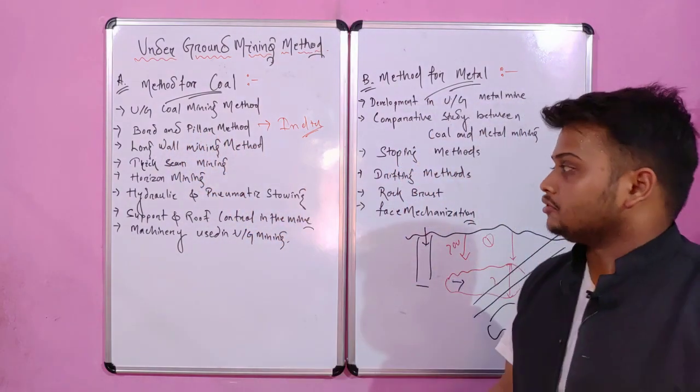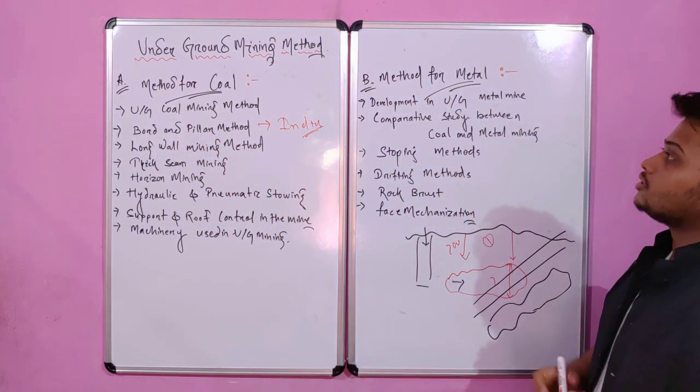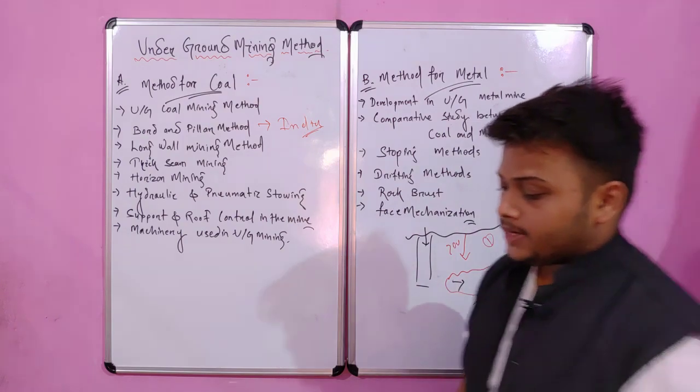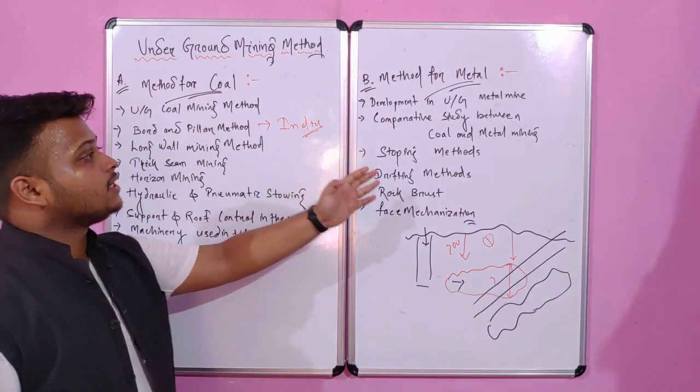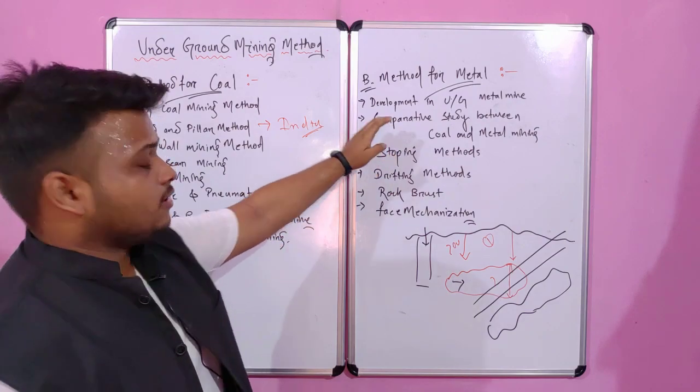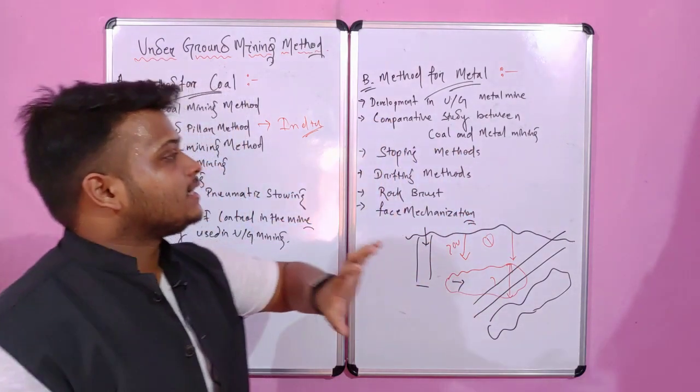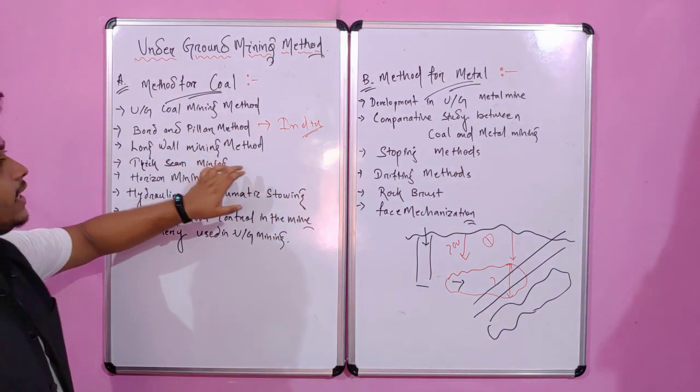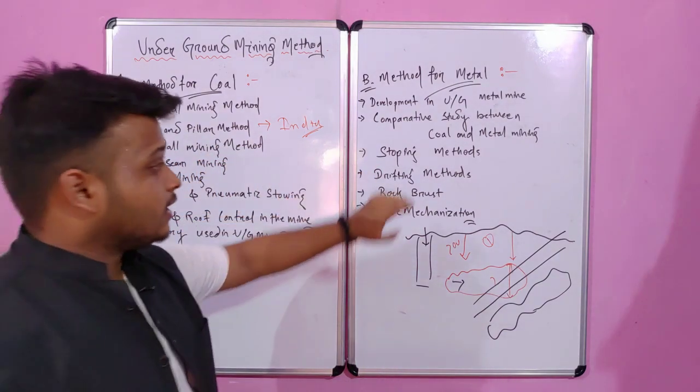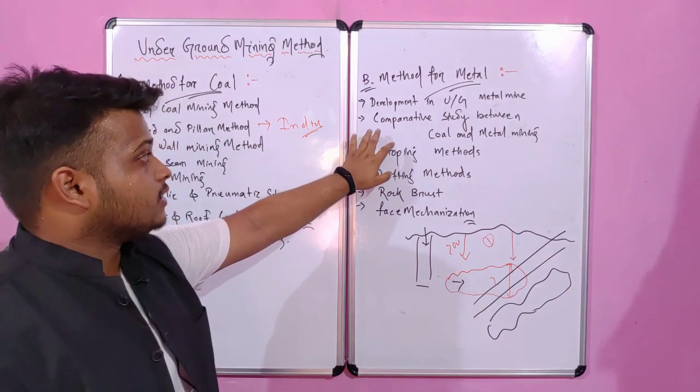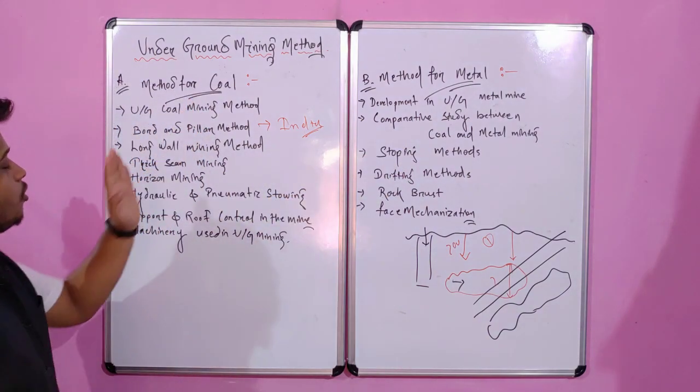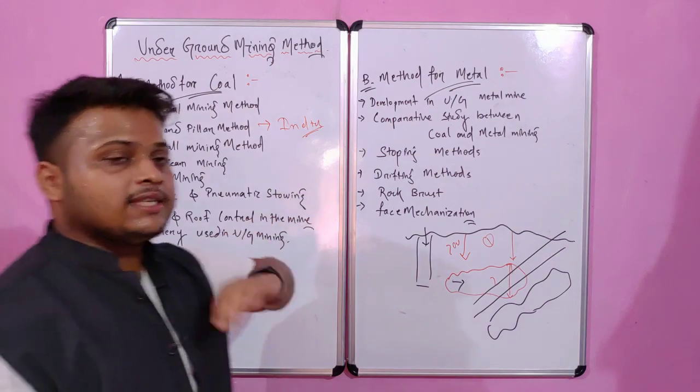Then comes the part of metal mining methods. We discuss the developmental process and a short comparative study between coal mining and metal mining methods. In this chapter we discuss the differences and similarities between coal and metal mining.